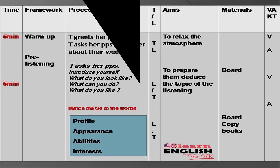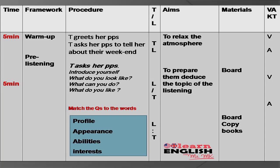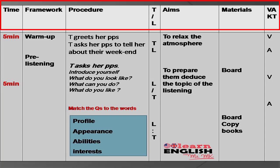Let's start. I just want to remind you the content of each column. You have time, then you have framework — it means the steps that should be followed in the listening lesson. Then you have procedure, which means how each activity should be done. Then you have TL, which means the role of the teacher and the learner. In the competency-based approach, the role of the learner should be active and learner-centered. Then you have the aim — the general objective of the lesson and the aim of each activity.